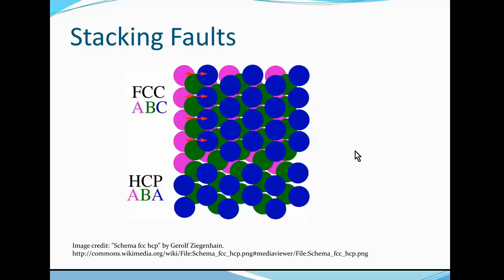In the previous learning unit we learnt that the only difference between face-centered cubic and hexagonal close-packed crystal systems was the order in which the close-packed planes were stacked. In a perfect HCP crystal the stacking order would be A-B-A-B-A-B, and in FCC it would be A-B-C-A-B-C. However, the conditions of crystal growth invariably result in stacking faults where the perfect pattern is not followed. This is known as a stacking fault.